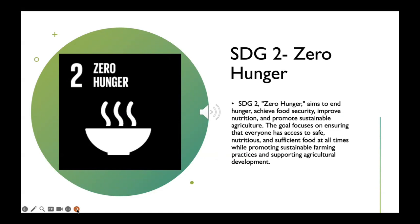SDG 2 also emphasizes the importance of supporting small-scale farmers, especially women, and facilitating their access to resources, markets, and financial services. It recognizes the interconnectedness of hunger, poverty, and sustainable development, highlighting the need for integrated approaches that address both immediate food needs and long-term challenges of food production. By attaining zero hunger, the aim is to ensure that no individual suffers from hunger or malnutrition, contributing to improved health, well-being, and overall sustainable development.